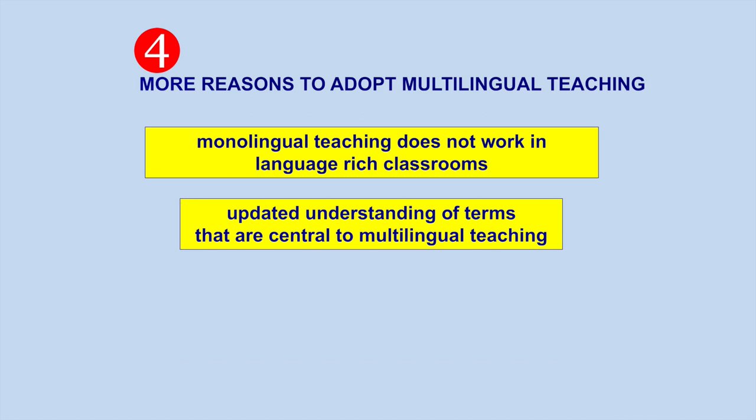Recent research has provided us with an updated understanding of terms central to multilingual teaching, including language, literacy, multilingualism, learners, learning, language learning, and the role of the teacher. Findings from recent research studies have established the following: children can manage and effectively navigate more than one language; bilingualism has a positive impact on learners' personal, social, linguistic, and cognitive development; bilingual children use language differently than monolinguals; and multilingual environments can enhance the communicative skills of all children.